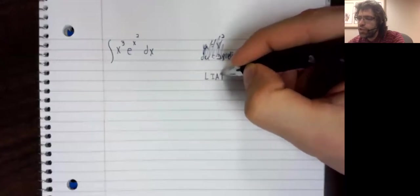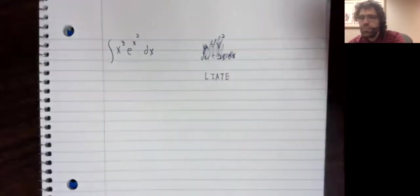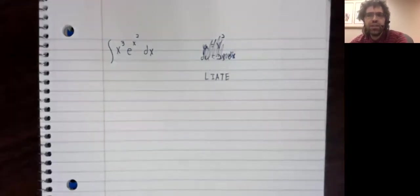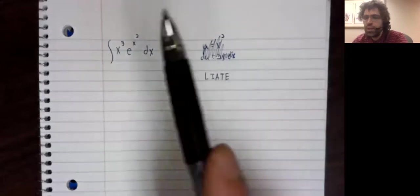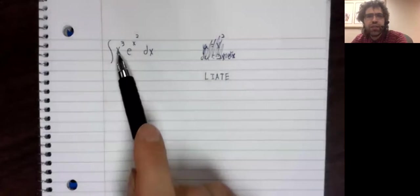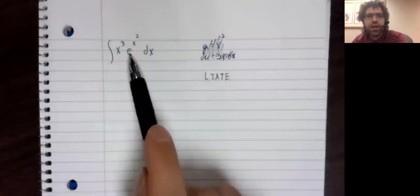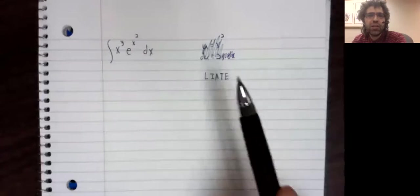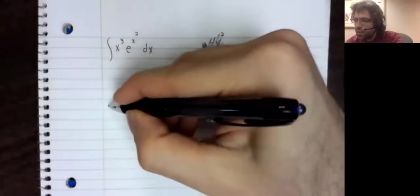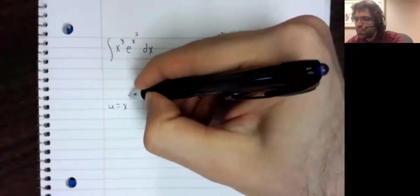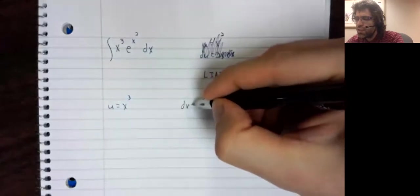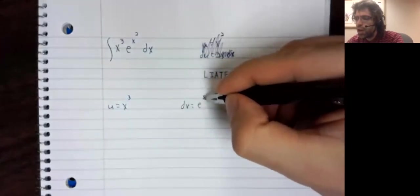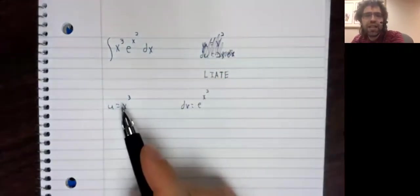And to do integration by parts, we have this guideline LIATE that's supposed to help us select u. We have an algebraic function here, some kind of messy exponential thing here. Algebraic comes before exponential. So according to LIATE, this is what we are to try. We should let u be the algebraic function.